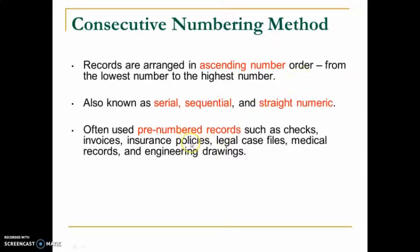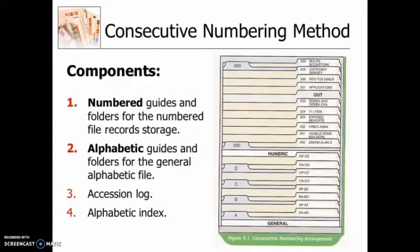Other examples of pre-numbered records include insurance policies, invoices, legal case files, medical records, and engineering drawings. For the consecutive numbering method, there must be four components: numbered guides and folders, alphabetic guides and folders, accession log, and alphabetic index.